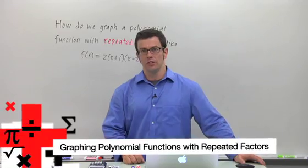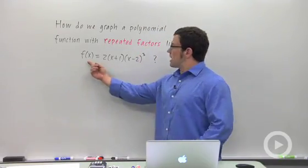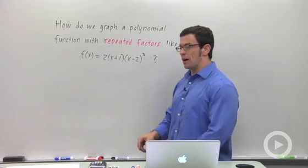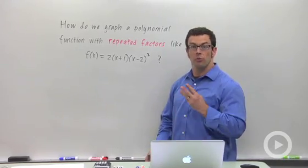I want to talk about graphing polynomial functions that have repeated factors. Let me show you what I mean. I've got an example here, f of x equals 2 times x plus 1 times x minus 2 to the third power. This is a repeated factor. You can think of x minus 2 as being a factor three times.